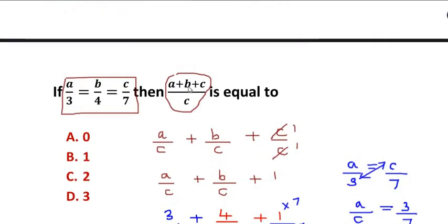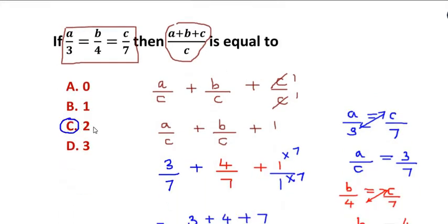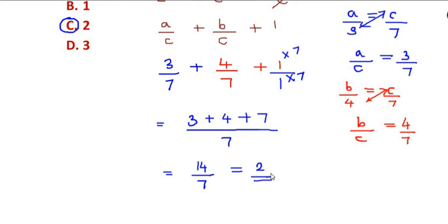So the value of (a+b+c)/c is equal to option C, which is 2, as we got in this answer.